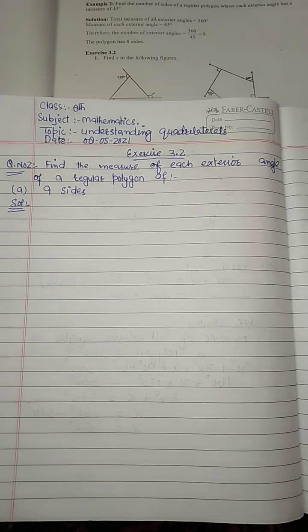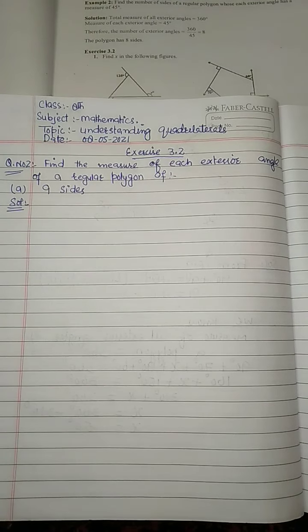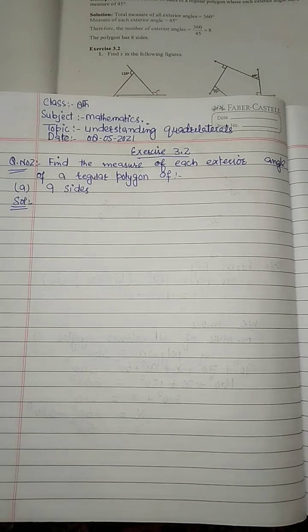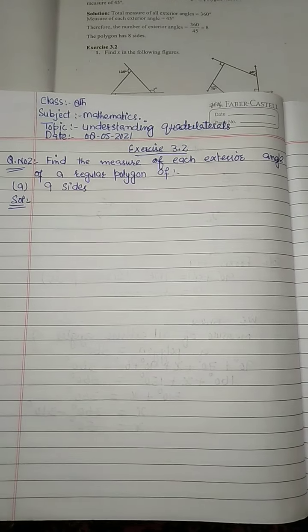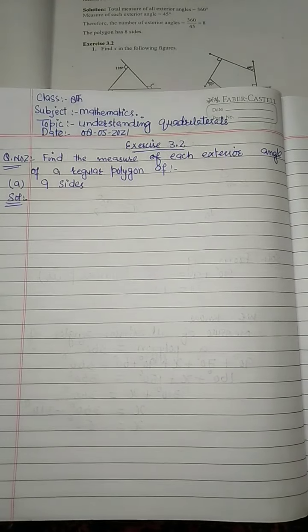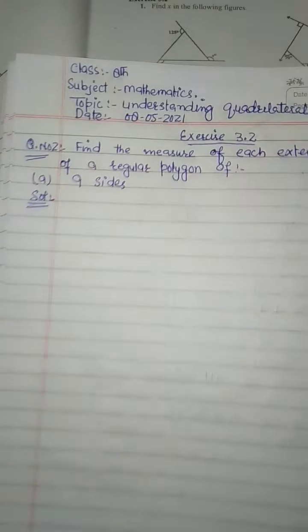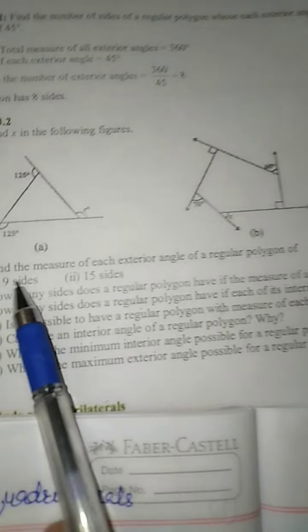Assalamu alaikum dear students. Take out your mathematics book. Today's topic is understanding quadrilaterals, Exercise 3.2, Question 2. Find the measure of each exterior angle of a regular polygon of nine sides and fifteen sides.